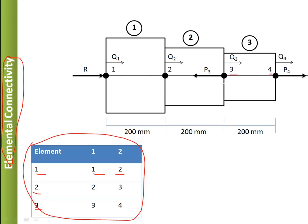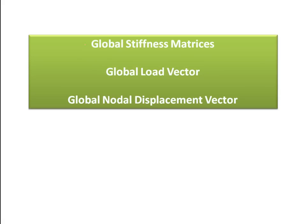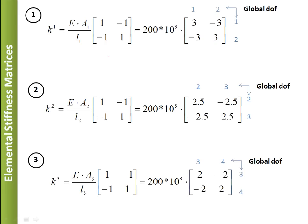The next step is to form the equilibrium equation. For this we need the global stiffness matrix, the global load vector, and the global nodal displacement vector. These three matrices are composed together to create the equilibrium equation. We start by forming the global stiffness matrix using the elemental stiffness matrix equation.